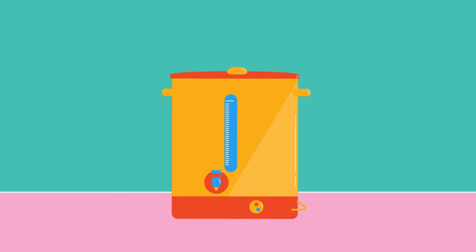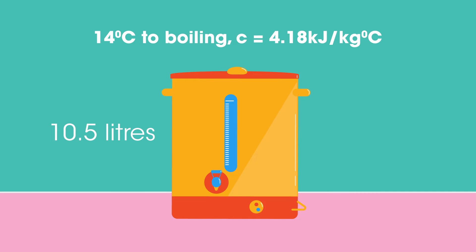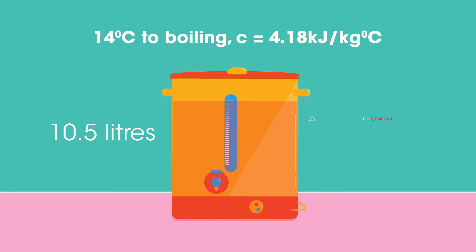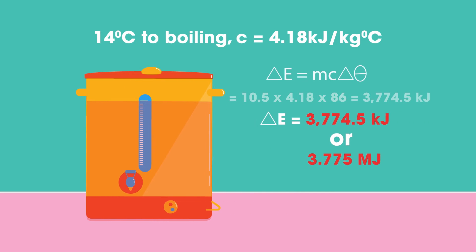This water boiler holds 10.5 litres of water. How much energy is transferred if the water at 14 degrees Celsius is heated to boiling point? Pause the video while you work it out. Did you get 3,774.5 kilojoules, or 3.775 megajoules?